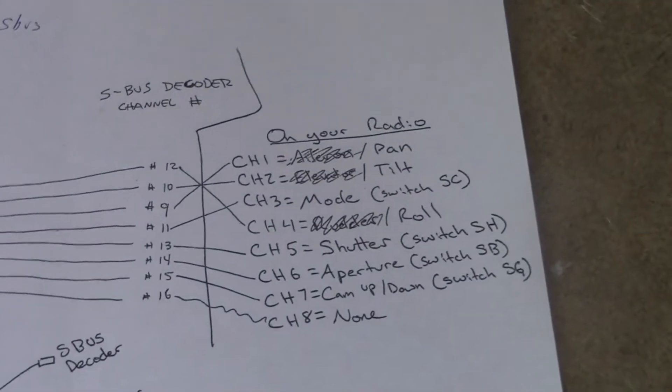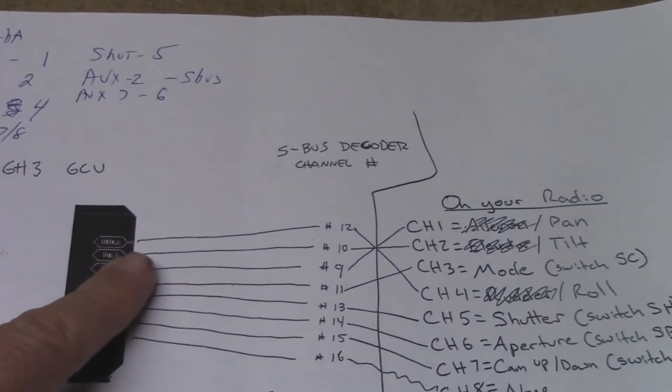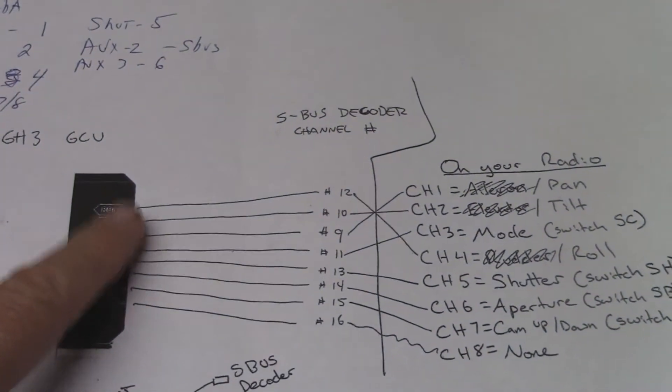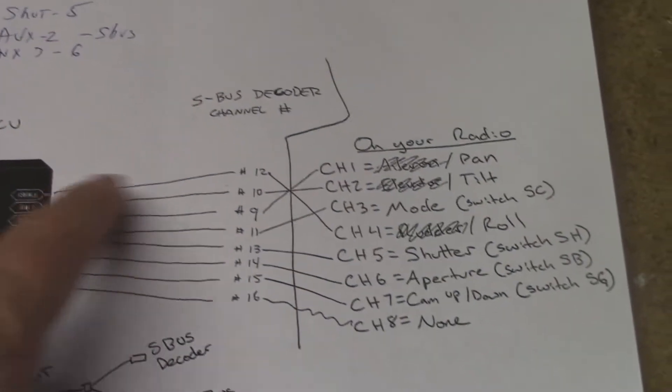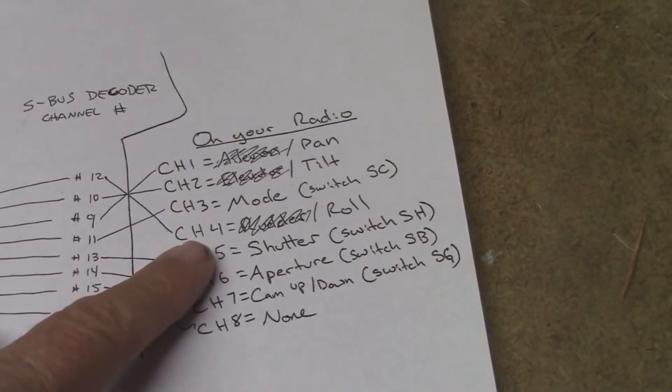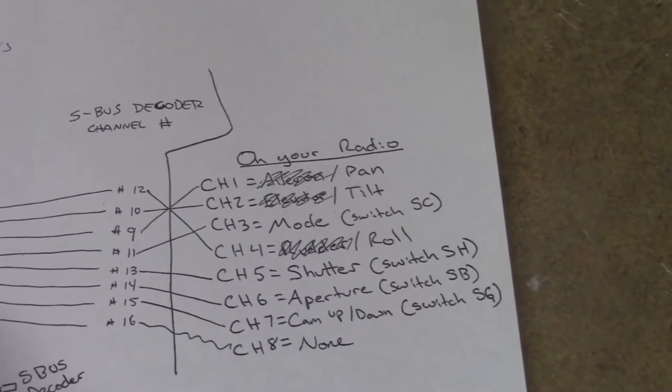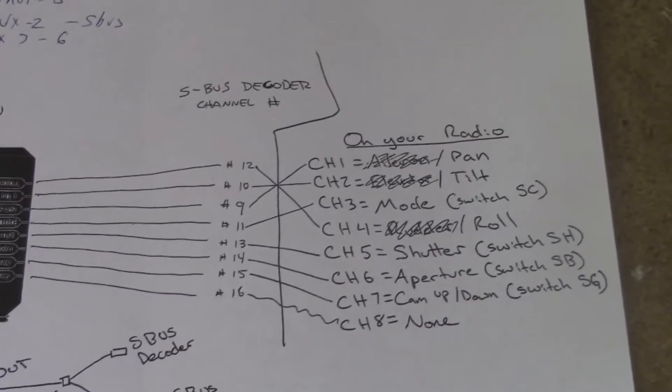So there's my roll coming out of the Zenmuse there, my GCU. And what I've done is I've mapped it over to my channel 4 on my second radio.